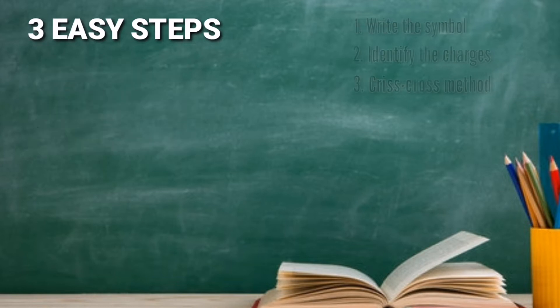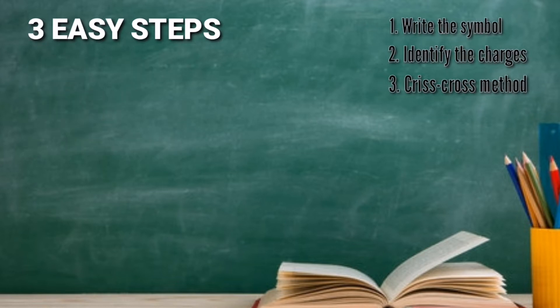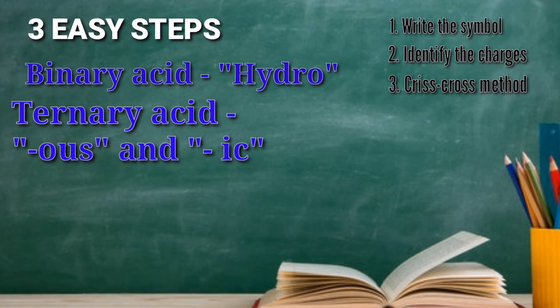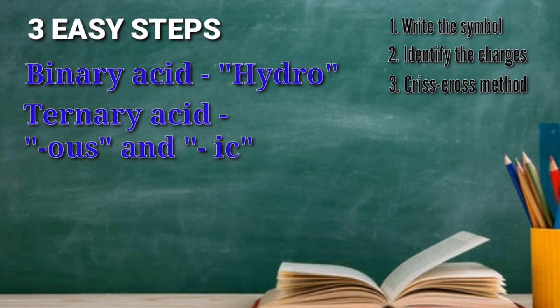If you are not still familiar with the symbols and the oxidation numbers of the elements, please get your periodic table as your reference. Remember that we have two types of acidic compound: the binary and the ternary acid.